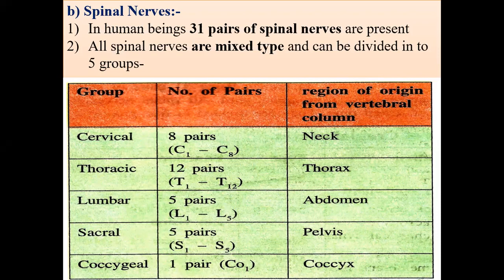The next region is the sacral region. In the sacral region, again five pairs are present, symbolized as S1, S2, S3, S4, and S5, where S stands for sacral. These sacral nerves arise from the pelvic or lower abdominal region.